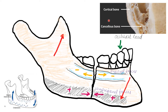Another point in the rationale: fixation of the screw is very difficult in the alveolar process because of the presence of tooth roots. Because the roots are present, fixing in that area — the alveolar process area — becomes very difficult.